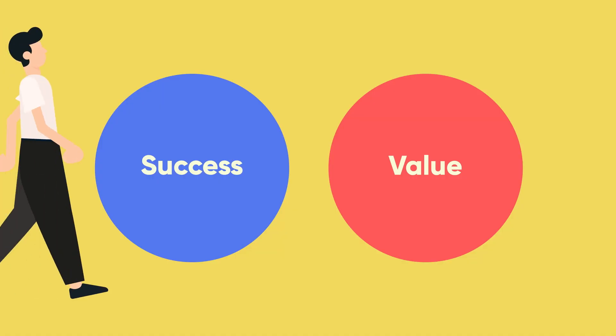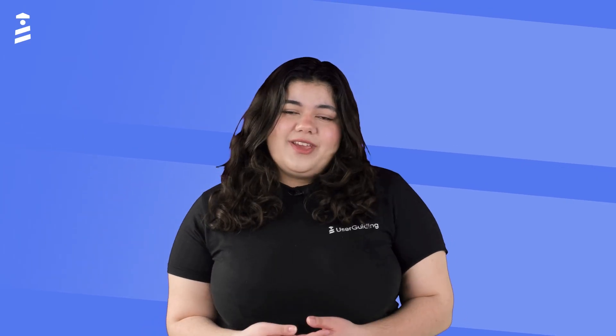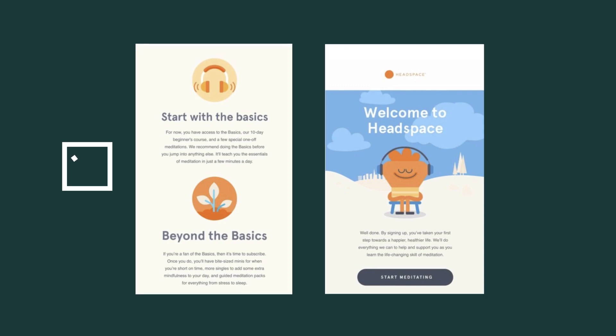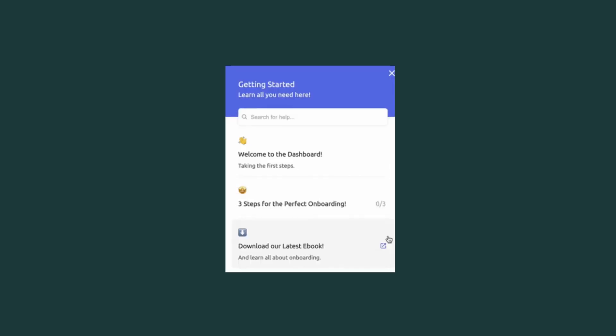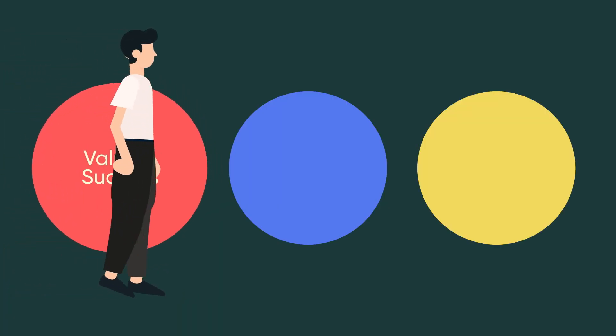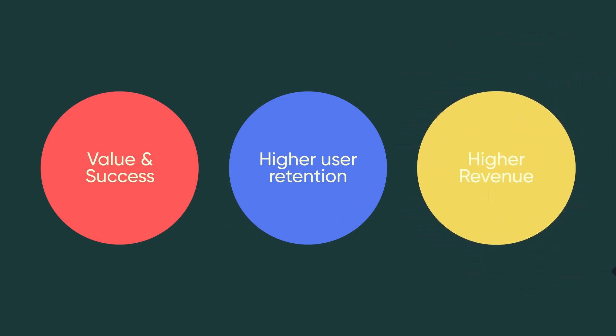Not much. If it delivers a user to success and value using the right UX elements, it's pretty much user onboarding. For example, this employee onboarding sequence by Ram is also user onboarding. This email you get after signing up to Headspace, that cute little smiley chatbot on any website you go on these days, the stuff you put on your help center, and the stuff you put on your resource center from your help center — all that, directly or indirectly, brings a user to value and success, which then leads to higher user retention, which then leads to higher revenue.